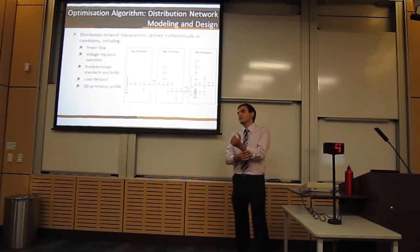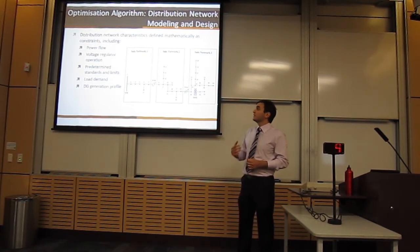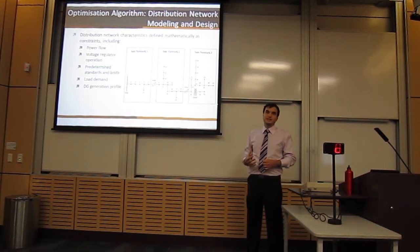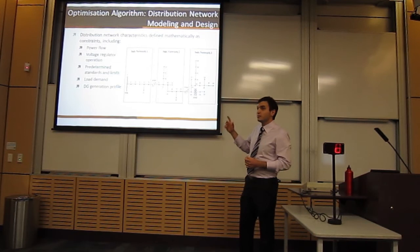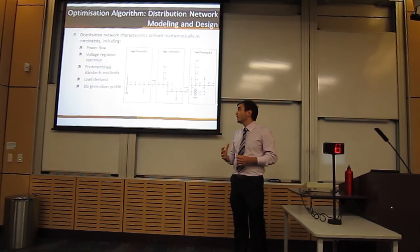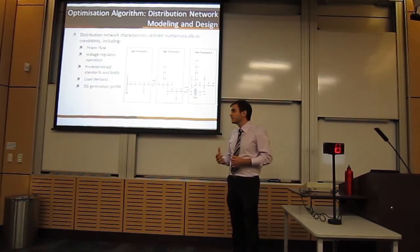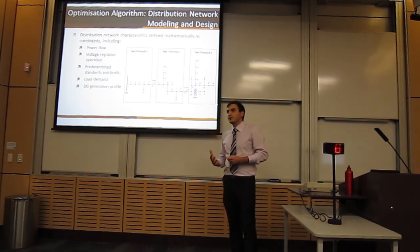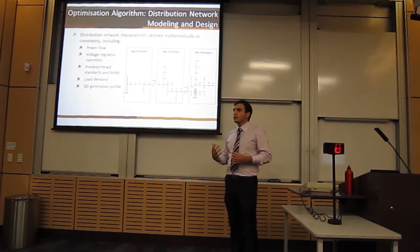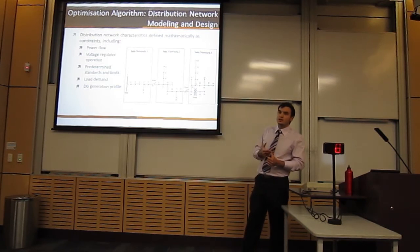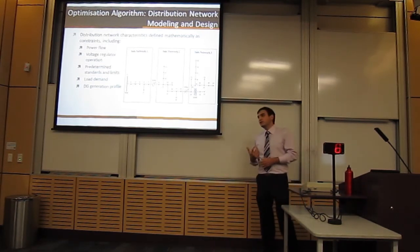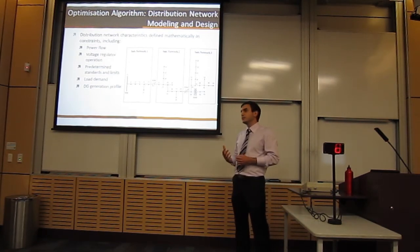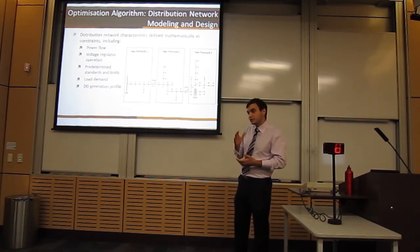In order to ensure that the optimization algorithm correctly modeled the distribution network, the network constraints were modeled mathematically and implemented as constraints into the optimization algorithm. The entire network was split into three sub-networks, each joined by a step voltage regulator. For each network, load flow equations were implemented to determine voltage and real and reactive power at each bus. The step voltage regulator operation was then implemented to join the three networks. Predetermined standards were applied to ensure voltages at each bus were within network standards, and that current capacity of transmission lines and equipment ratings were not exceeded. The time-varying nature of load demand and DG generation was implemented by separating the model into discretized time steps over a 24-hour period.